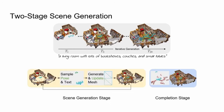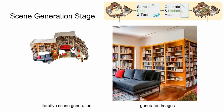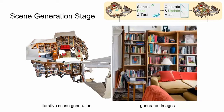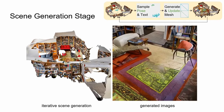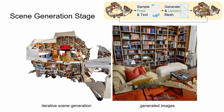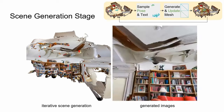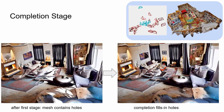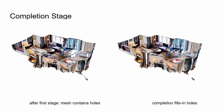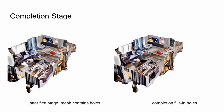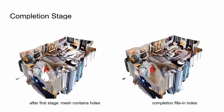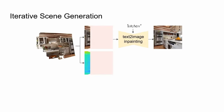We create a scene from a sequence of generated images, splitting our method into two stages. In the first stage, we sample predefined camera poses from which the scene is built up over time. In the second stage, we sample additional poses that fill in the remaining holes of the mesh. The resulting scene contains multiple objects and structural elements like walls and floors.